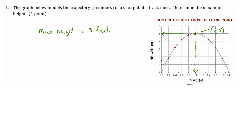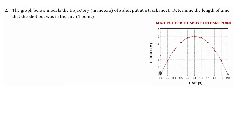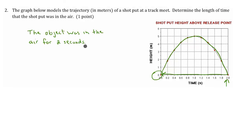On to question number two. Our object starts right here where time is zero and height is also zero, and it's going to go up in the air. Time increases, and then the object falls back down to the ground. It reaches two seconds, and that's when the object hits the ground, because if we follow our horizontal axis over, we see that height is zero at two seconds. So we can say that the object was in the air for a total of two seconds.